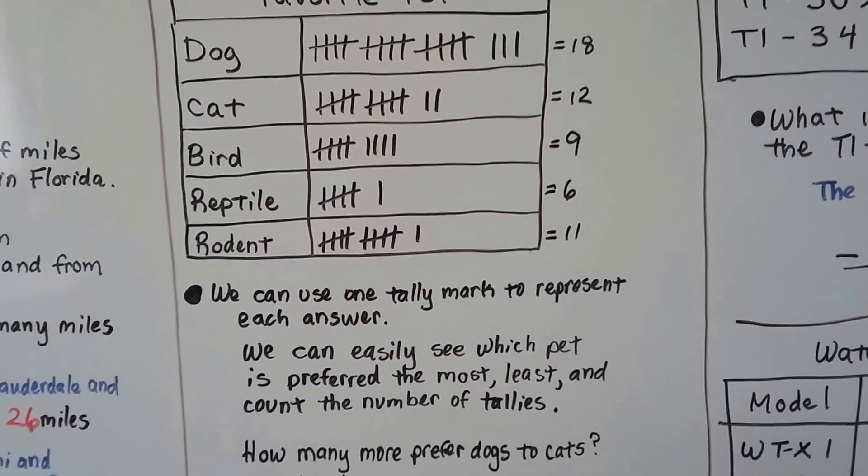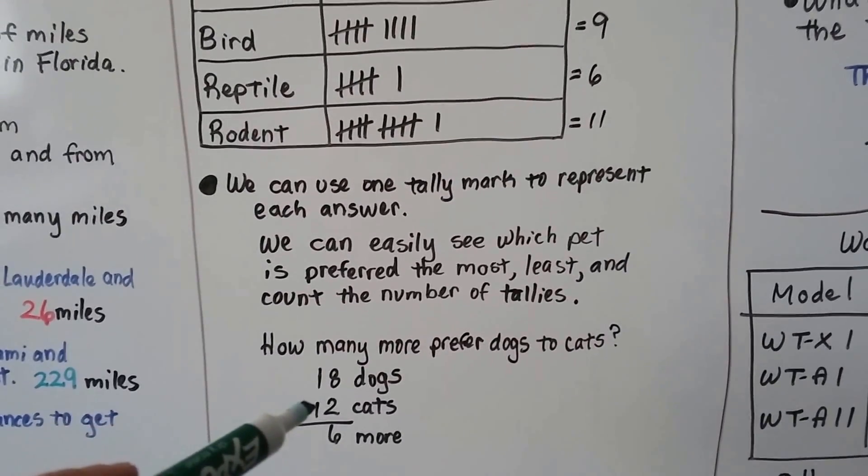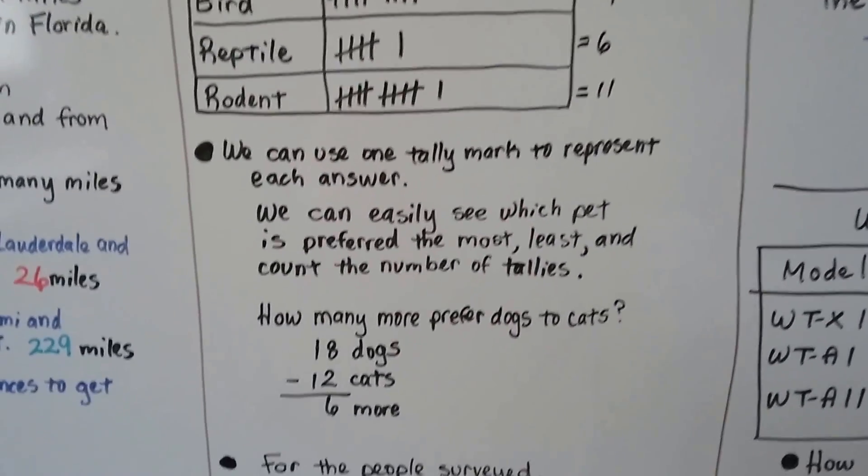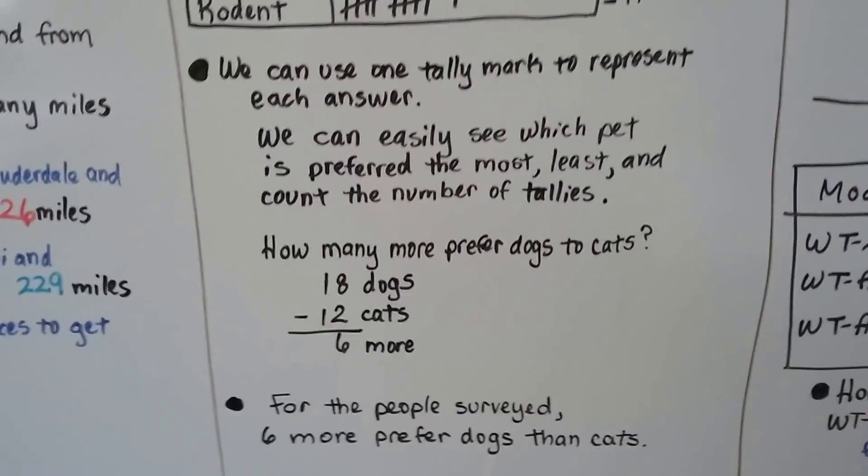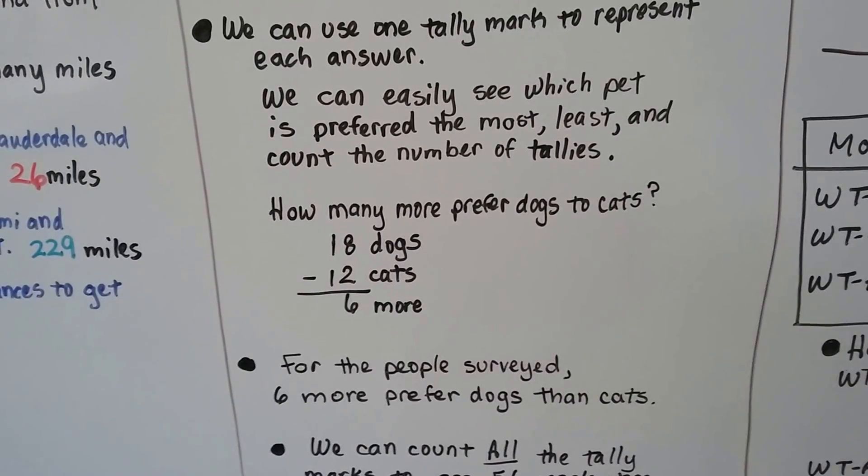So how many more preferred dogs to cats? Well, we have 18 dog answers and 12 cat answers. We pull the information from the tally table and we see that there's six more. For the people surveyed, six more preferred dogs than cats.